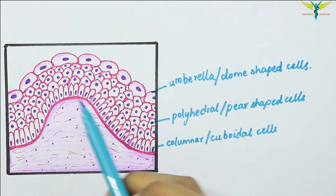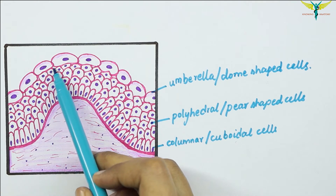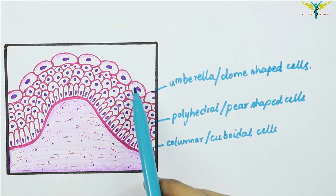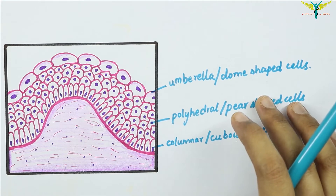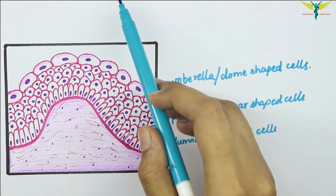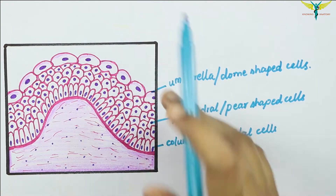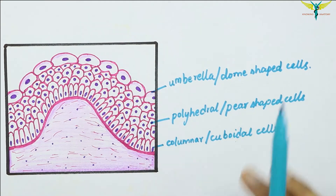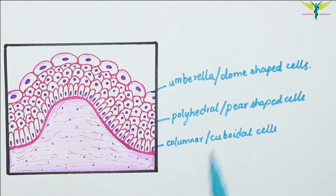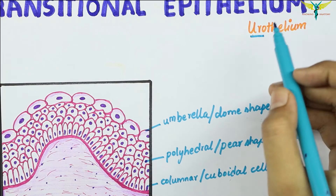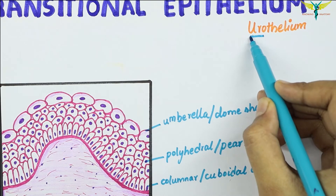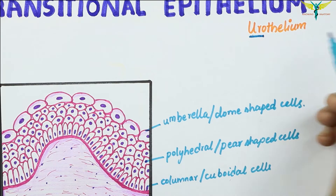You can see the flat nuclei in the umbrella-shaped or dome-shaped cells on the surface view of the transitional epithelium. Remember, this transitional epithelium lines most of the urinary tract, which is why it is called urothelium.